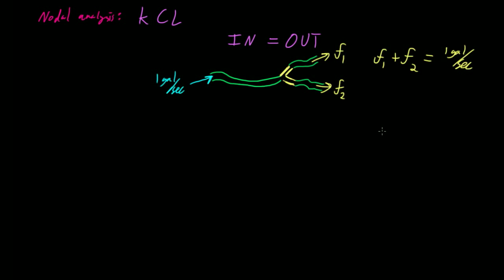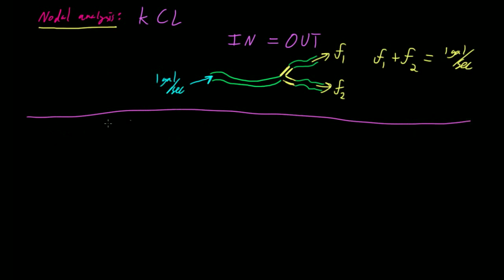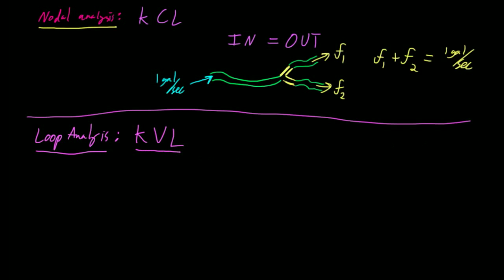That was the big picture law we used in nodal analysis — essentially what made nodal analysis possible. Now, what we're going to be talking about in loop analysis is Kirchhoff's voltage law. Just like we had KCL, in loop analysis we're going to have Kirchhoff's voltage law, and I'm going to write it down now.